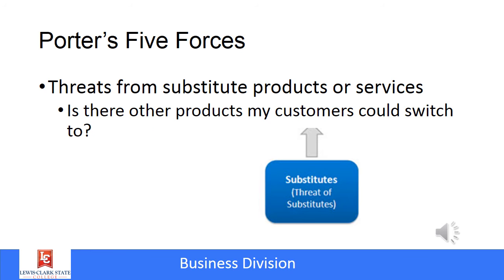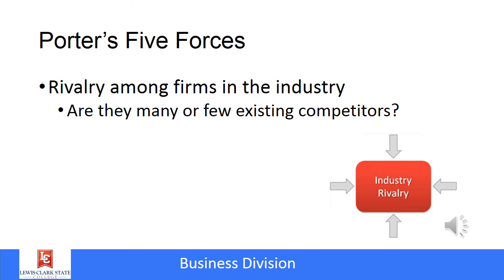Another very important threat Porter has us analyze is the threat of substitute products or services — do customers have to use our specific product or service, or could they switch to something similar? Porter also has us examine the rivalry among other firms in our industry. Do we have very strong competition, or are competitors few? That's another key factor in the Porter's Five Forces Model.